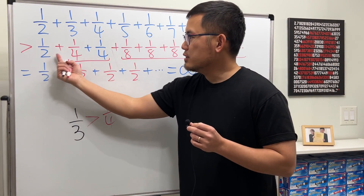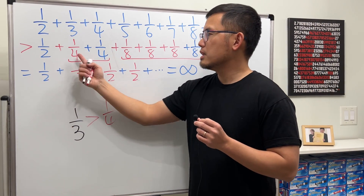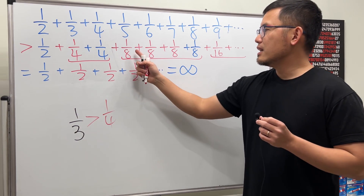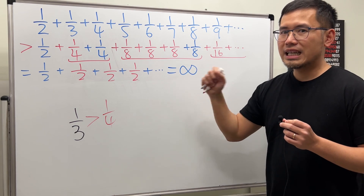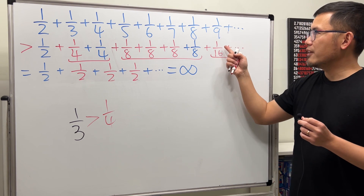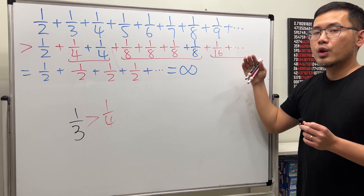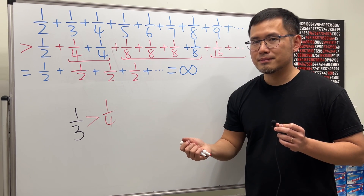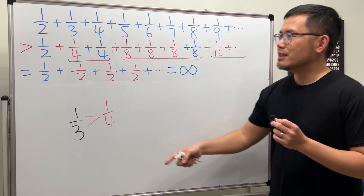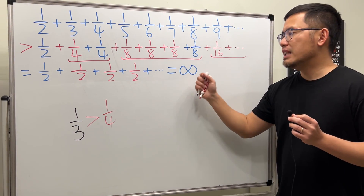Now, check this out. Here we have 1 over 2, plus 1 over 4 plus 1 over 4, which is 2 over 4, which is 1 over 2. And then we have four 1 over 8s — add them up, that's 4 over 8, which is 1 over 2. And then from 1 over 16, that came from 1 over 9 being greater than 1 over 16, up to 1 over 16 — we will have eight of the 1 over 16s, adding up to another 1 over 2. As you can see, this process will keep on going forever. So we are just adding infinitely many 1 halves, and then we end up with infinity.